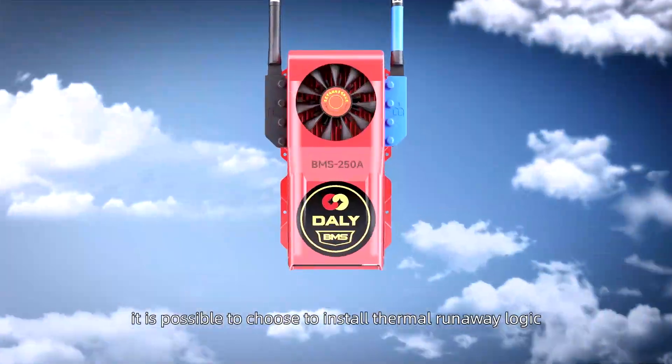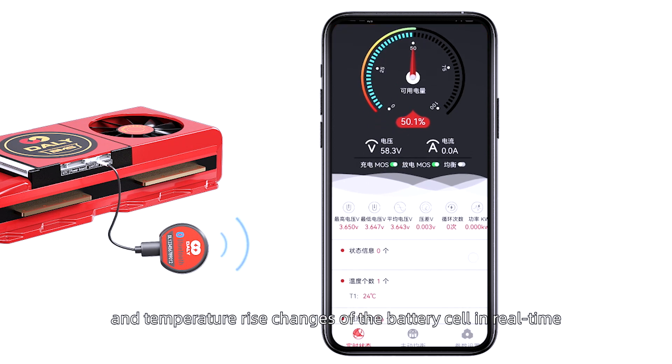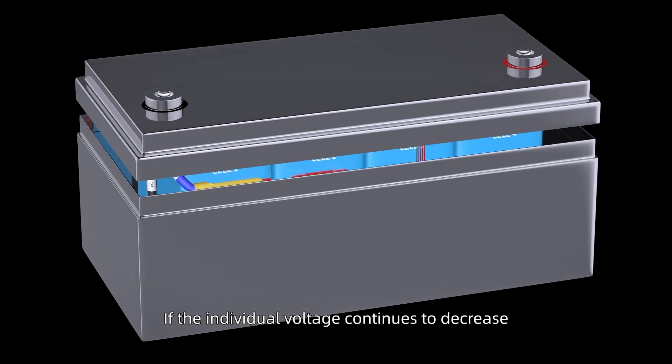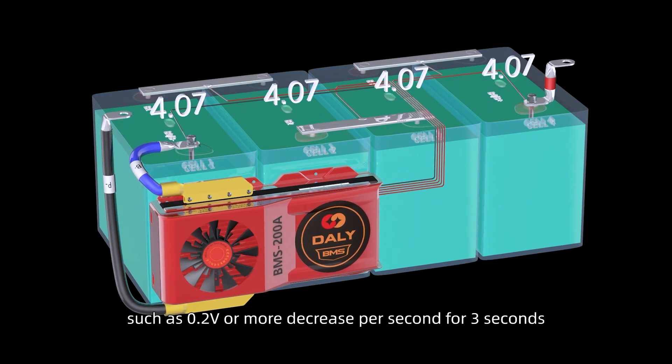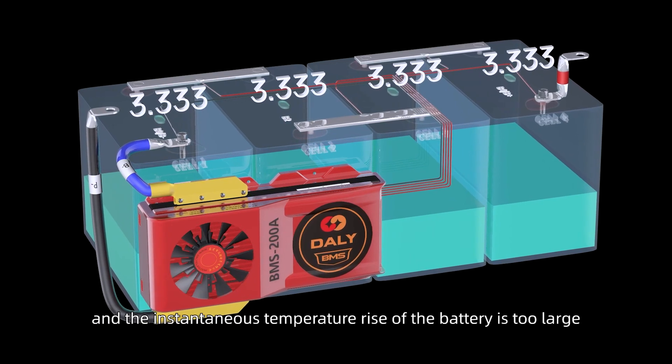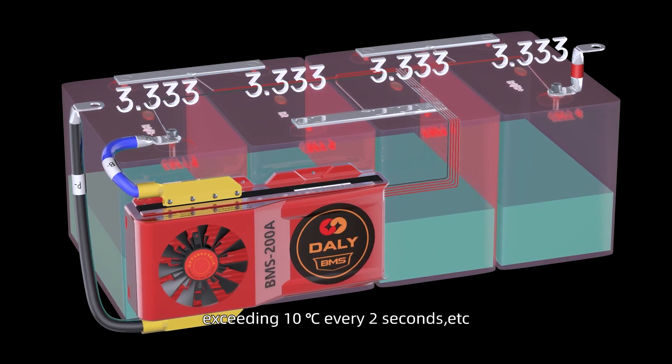it is possible to install thermal runaway logic. The BMS with thermal runaway logic will monitor the voltage and temperature rise changes of the battery cell in real-time. If the individual voltage continues to decrease, such as 0.2 volts or more decrease per second for 3 seconds, and the continuous temperature rise of battery is too large, exceeding 10 degrees every 2 seconds,